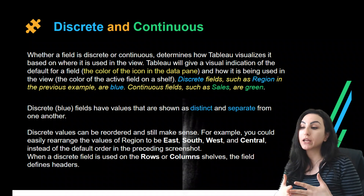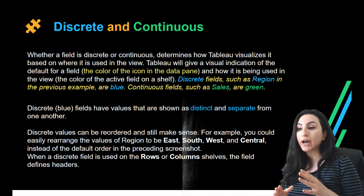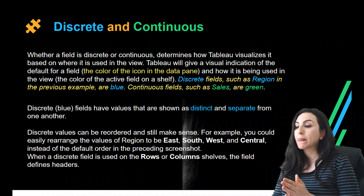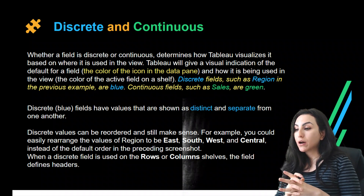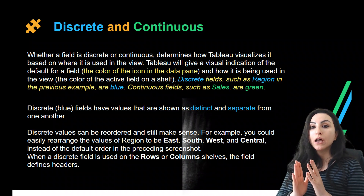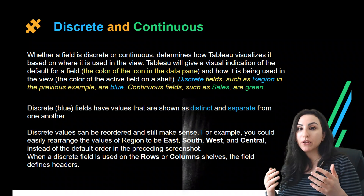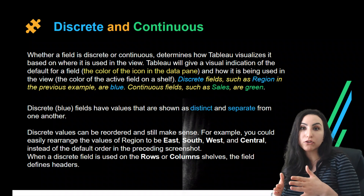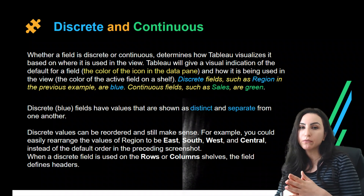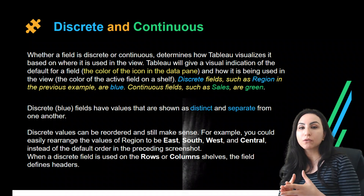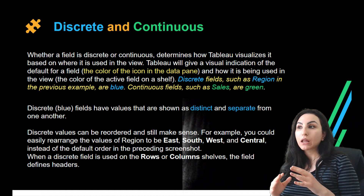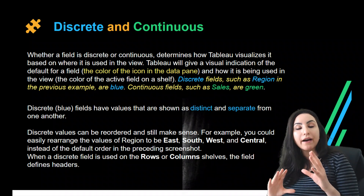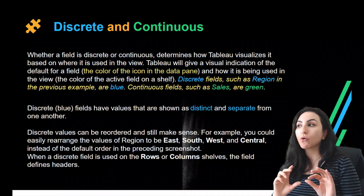Discrete values are also shown in blue, just like categories, while continuous or numerical values are in green. The color of the icon in the data pane helps you identify whether a field is discrete or continuous. When the data type cannot be anything but discrete — like region: east, south, west, central — it is discrete and categorical, and it cannot really be numerical given the nature of the data.